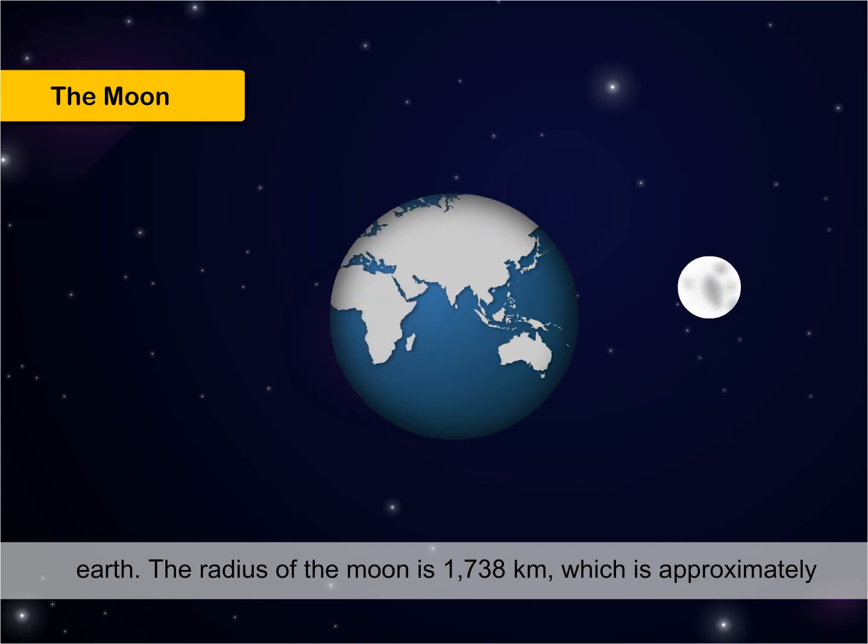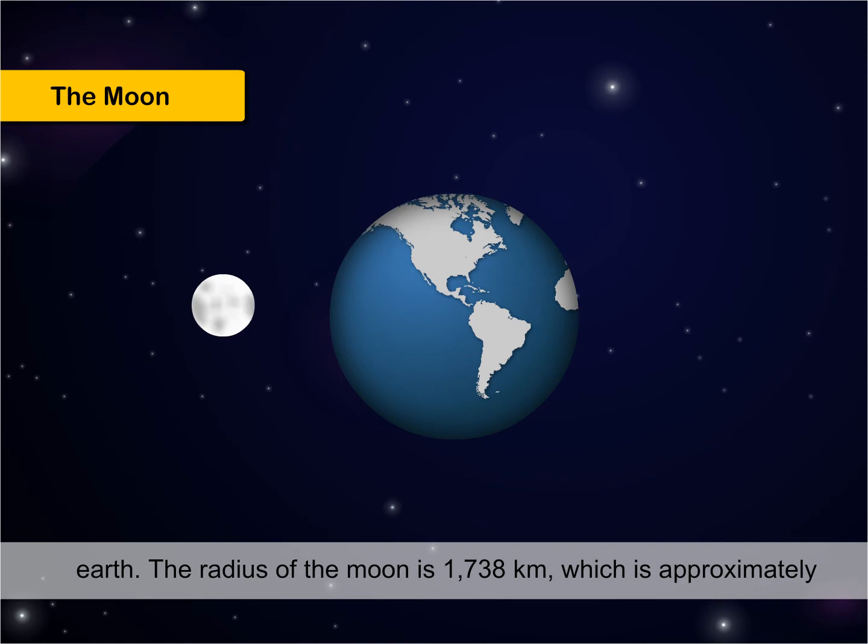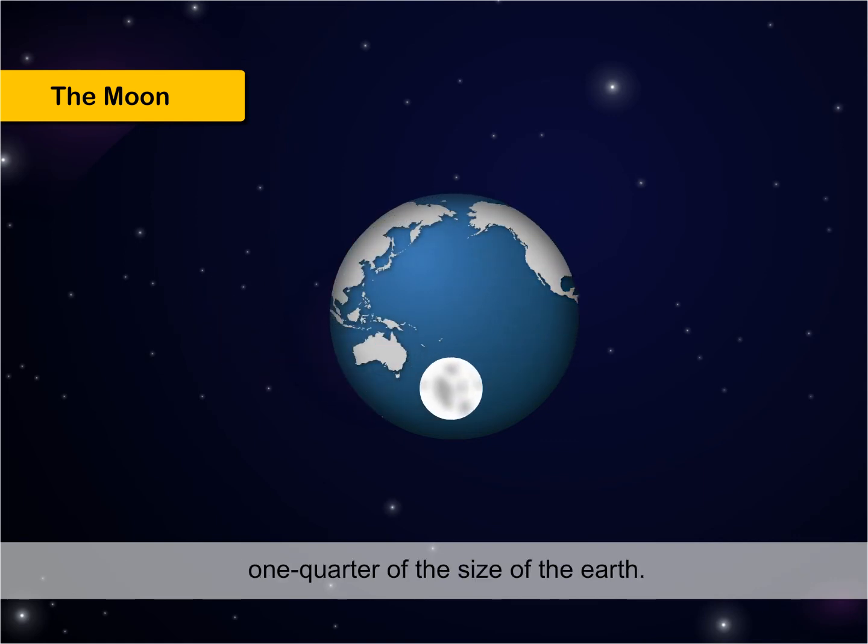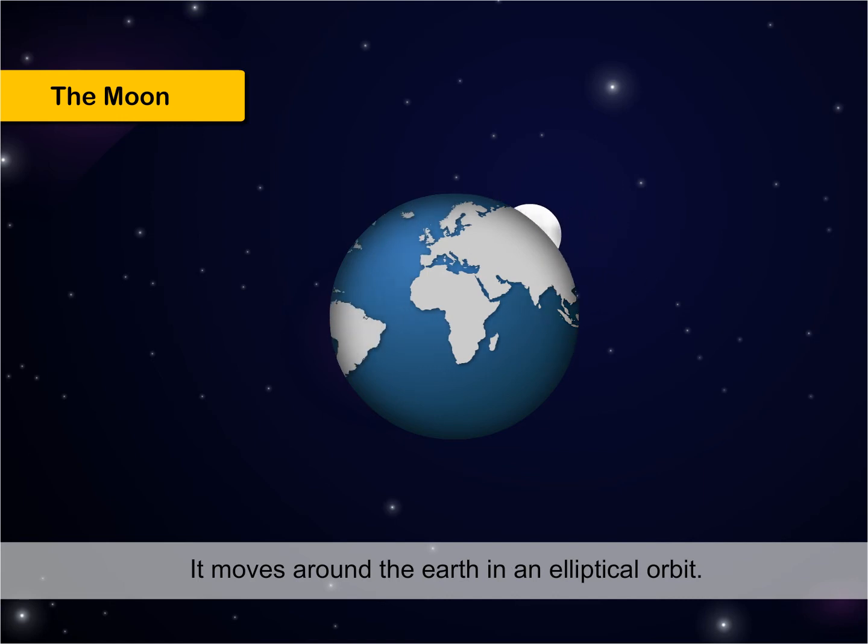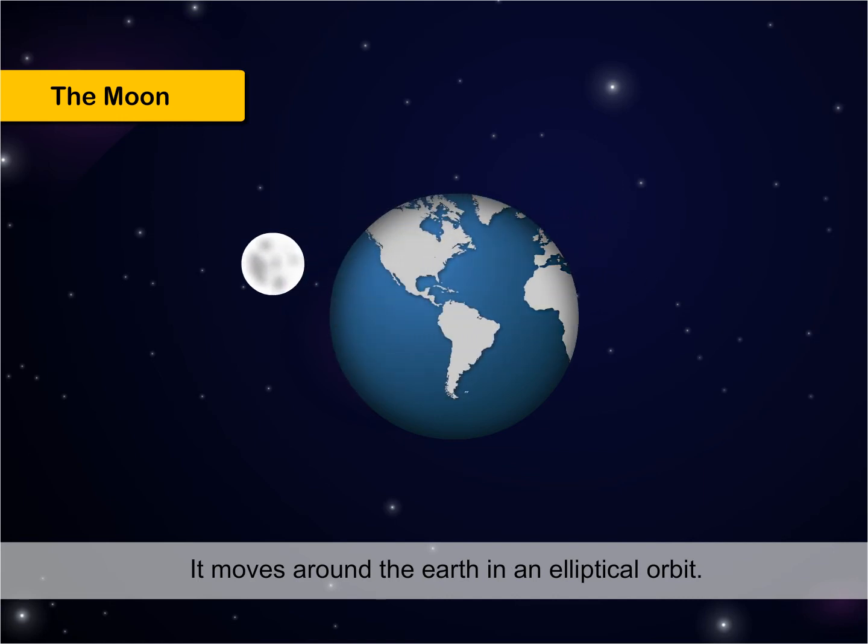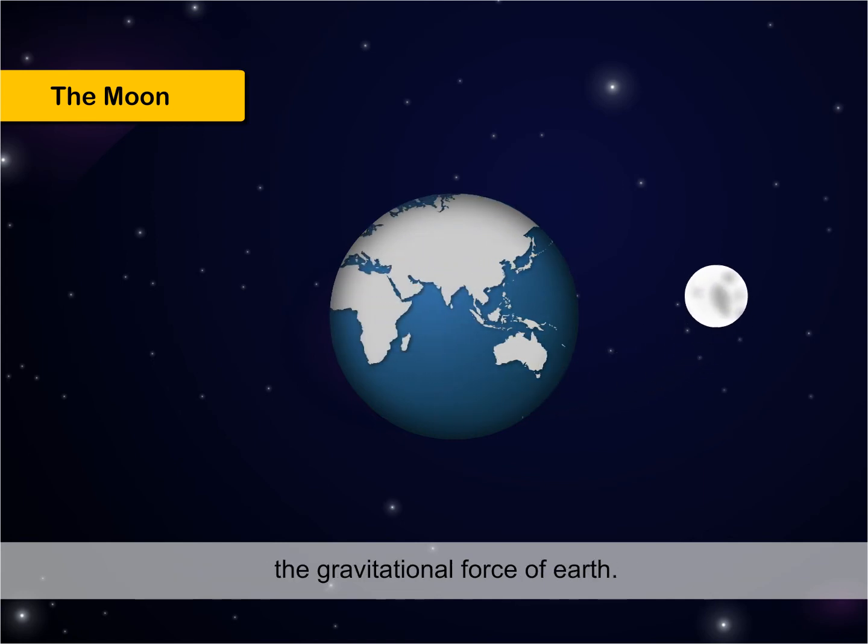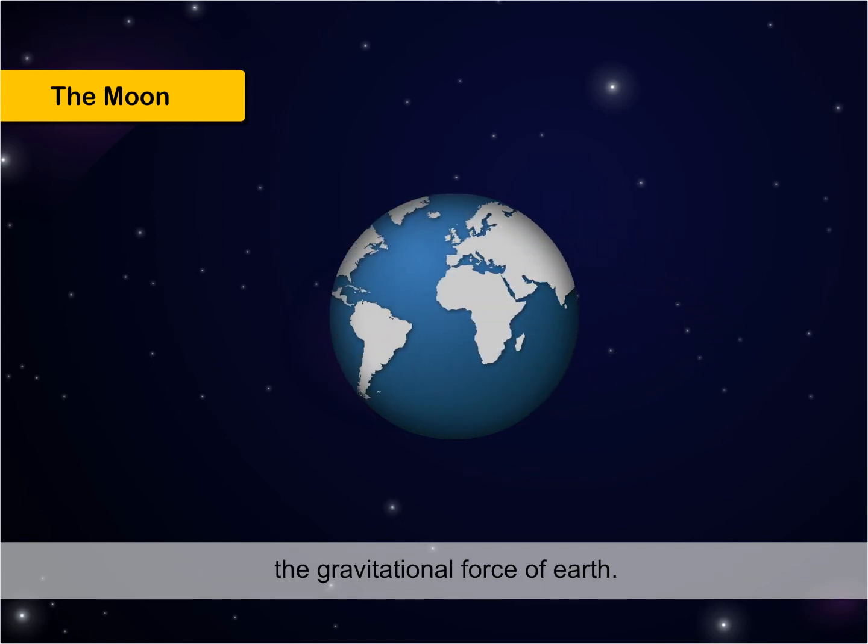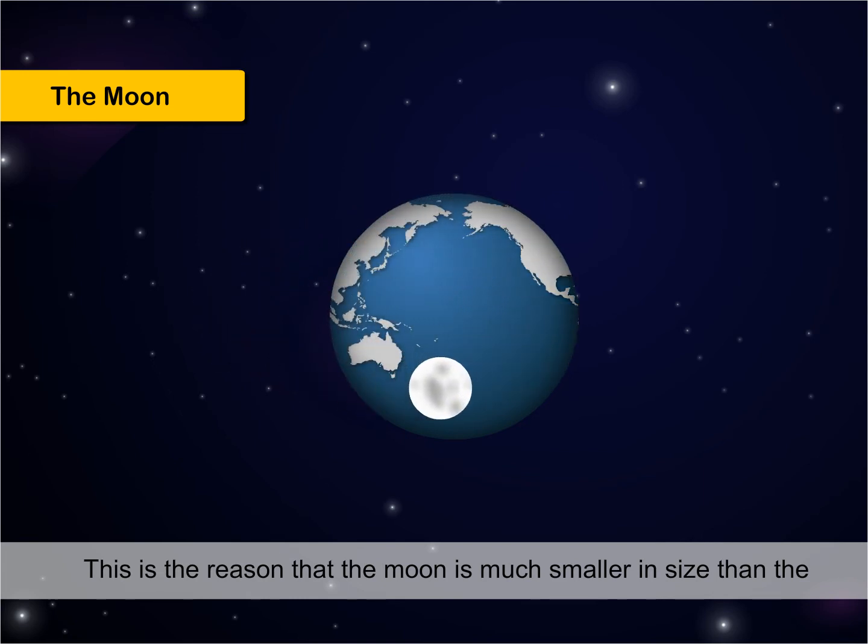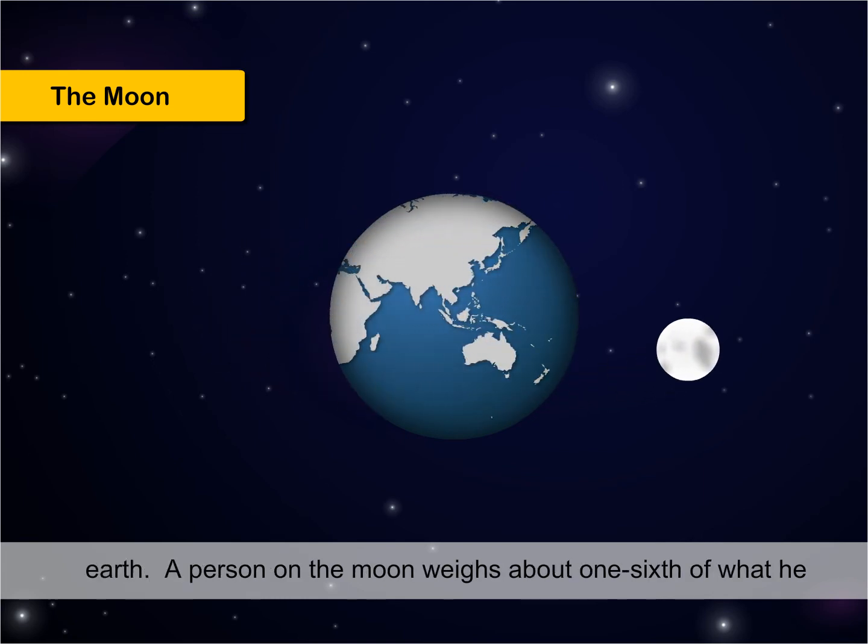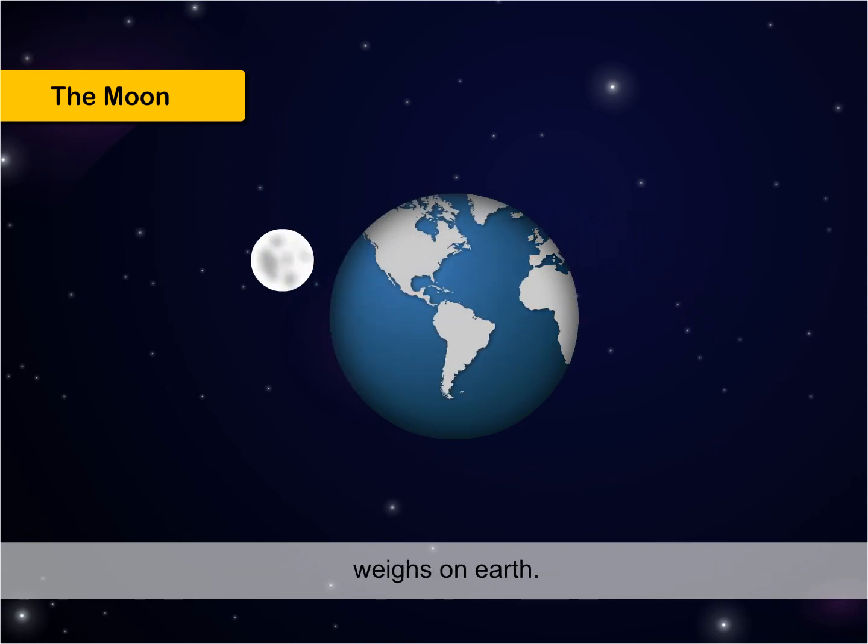The radius of the moon is 1,738 kilometers, which is approximately one quarter of the size of the Earth. It moves around the Earth in an elliptical orbit. Moon has a gravitational force, which is much weaker than the gravitational force of Earth. This is the reason that the moon is much smaller in size than the Earth. A person on the moon weighs about one-sixth of what he weighs on Earth.